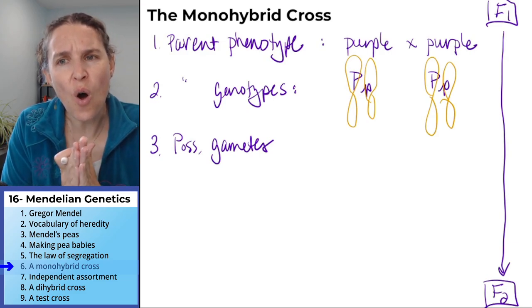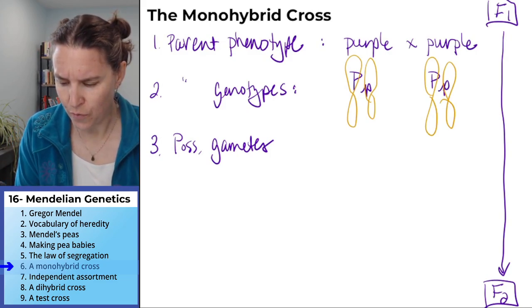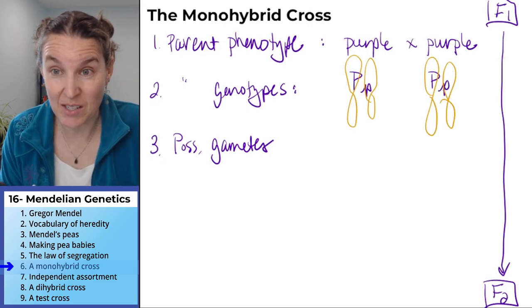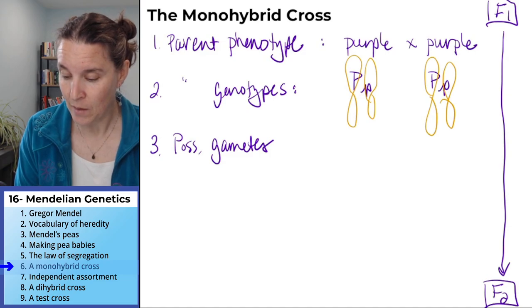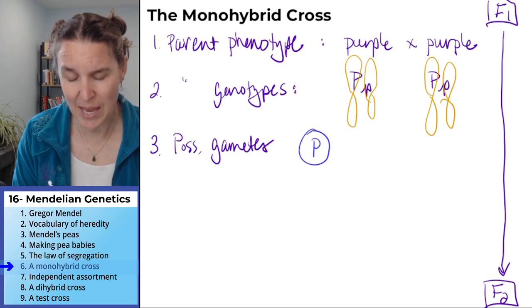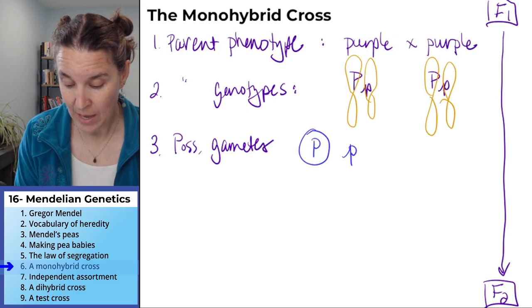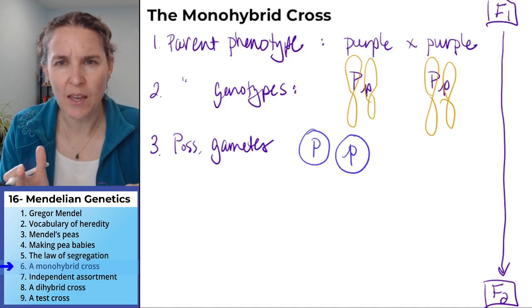So what are all the possible gametes that could result from my purple parents? They're the same parents, right? They have the same genotypes, so the possible gametes are going to be the same. Well, some of them are going to get the big P allele. Half of the gametes are going to get the big P allele, and the other half of the gametes are going to get the little P allele.